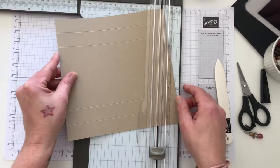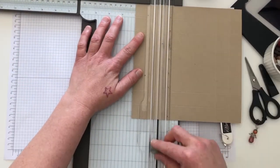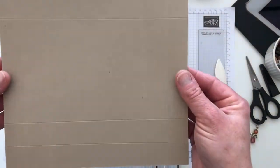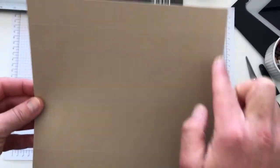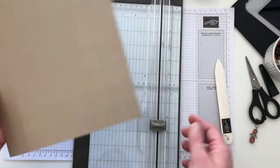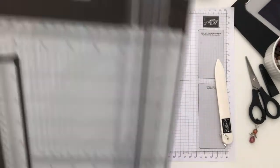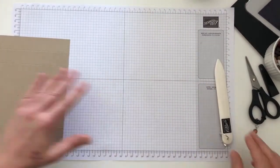And then the same again on all four sides at 5cm, so you should be able to see that I've got double score lines on all four sides. So just move my trimmer out of the way.